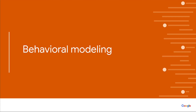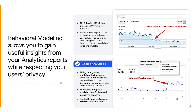Now let's do a deep dive on behavioral modeling. Behavioral modeling for consent mode is only available in Google Analytics 4 and it is not available in Universal Analytics. Consequently, if you use a cookie consent banner or another consent measurement solution, you'll miss data from users who opt out in Universal Analytics. Without modeling, you have only a partial understanding of user behavior on your site. Behavioral modeling in GA4 allows you to gain useful insights from your analytics reports while respecting user privacy, using machine learning to model the behavior of users who decline analytics cookies based on the behavior of similar users who accept analytics cookies. For example, behavioral modeling estimates data based on user and session metrics such as daily active users and conversion rate, that may be unobservable when identifiers like cookies or user IDs are not fully available.